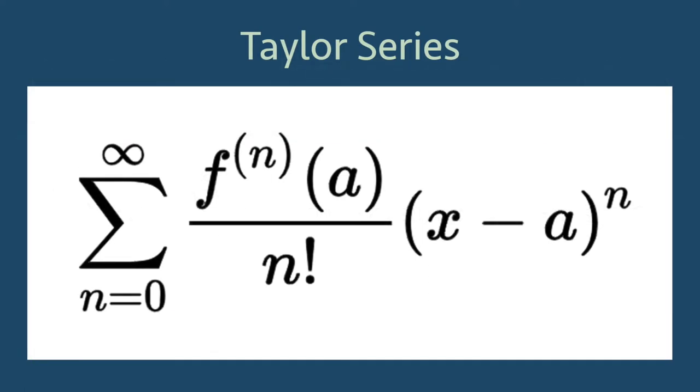When we learned how to write a function as a power series, we saw that the coefficients could be written in terms of derivatives of the function. With a Fourier series, the coefficients an and bn can be found with integration.